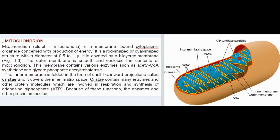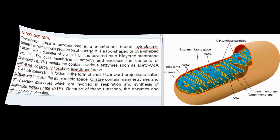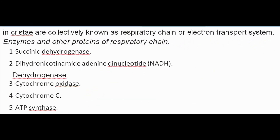Mitochondrion (plural: mitochondria) is a membrane-bound cytoplasmic organelle concerned with production of energy. It is rod-shaped or oval-shaped with a diameter of 0.5 to 1 μm, covered by a bilayer membrane. The outer membrane is smooth and encloses the contents, containing enzymes such as acetyl-CoA synthetase and glycerol-phosphate acetyltransferase. The inner membrane is folded into shelf-like inward projections called cristae, which contain many enzymes and protein molecules involved in respiration and synthesis of ATP, collectively known as the respiratory chain or electron transport system.